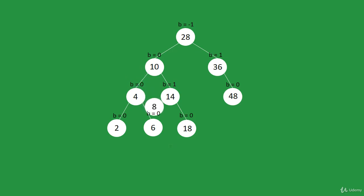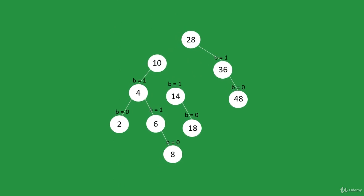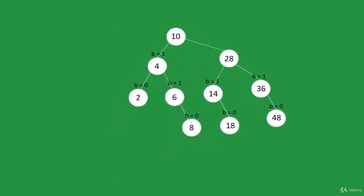Let's recompute balance factors. 6 will have balance of 1, 4 will have balance of 1, 10 will have balance of minus 1, and 28 will have balance of minus 2. Since 28 and 10 have both negative balance factors, we do right rotation and get this.